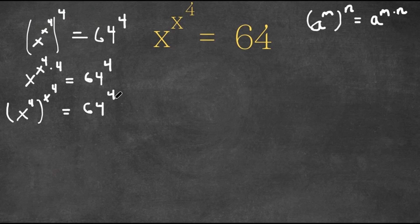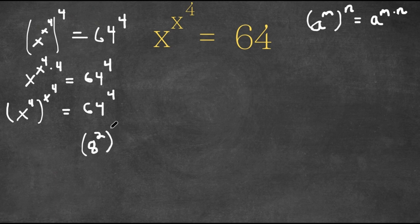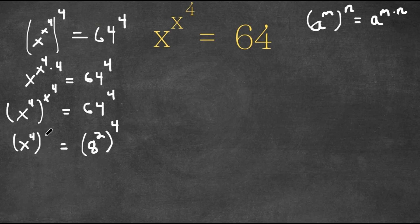Now, 64 can actually be written as 8 squared. So 8 squared to the power of 4, and this is still equal to x to the power of 4 to the power of x to the power of 4.